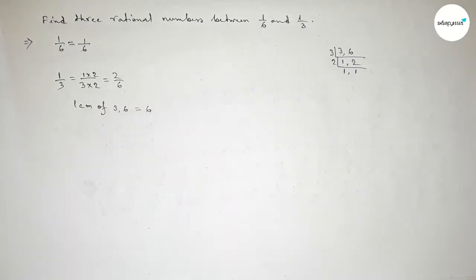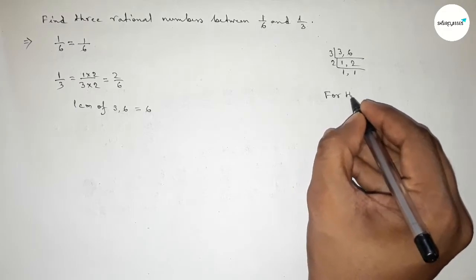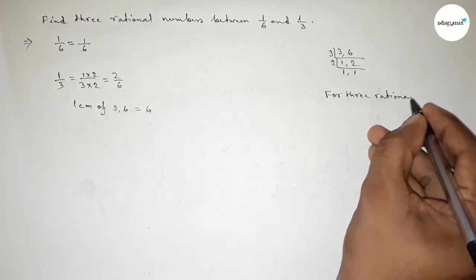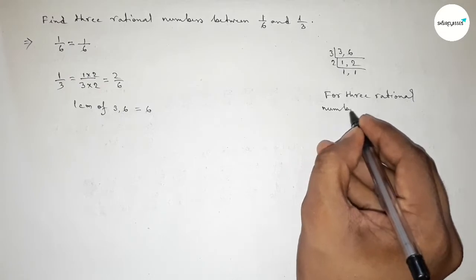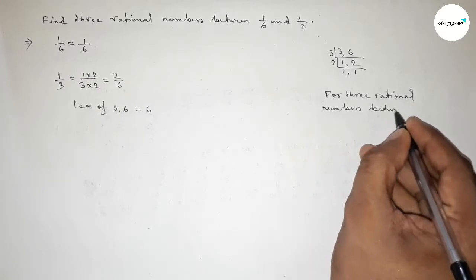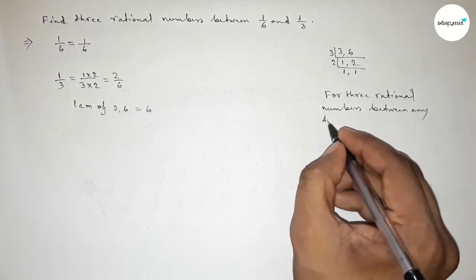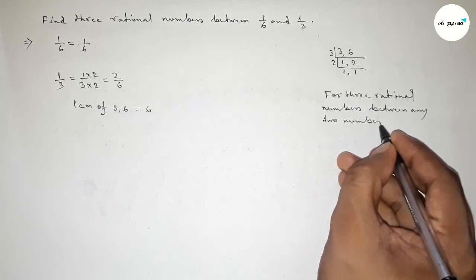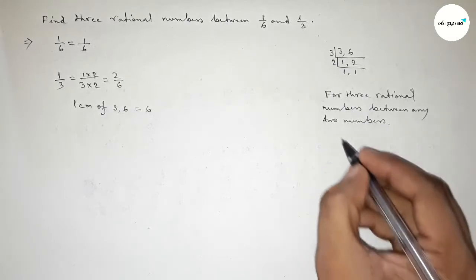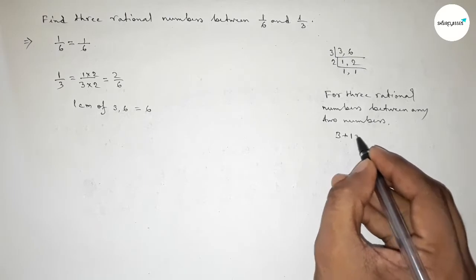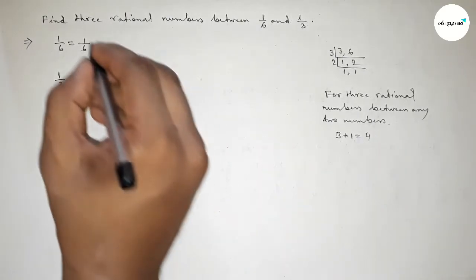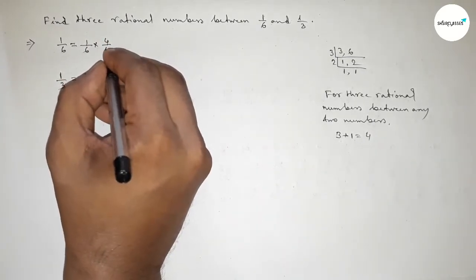Now here, for finding three rational numbers between any two numbers, we have to follow this important method. We should multiply both numbers by 3 plus 1, which equals 4. So we should multiply both numbers by 4.